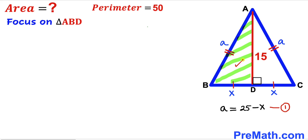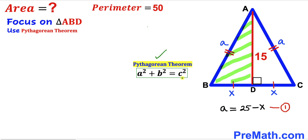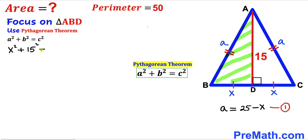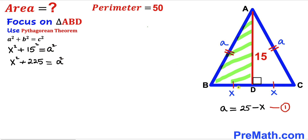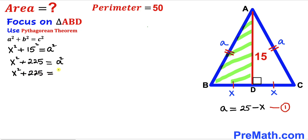Now let's focus on right triangle ABD and apply the Pythagorean theorem. The Pythagorean theorem states a squared plus b squared equals c squared. In our case, lowercase a is the hypotenuse, and the two other legs are x and 15. So we can write x squared plus 15 squared equals a squared. From equation one, a equals 25 minus x, so we substitute to get x squared plus 225 equals 25 minus x, whole squared.